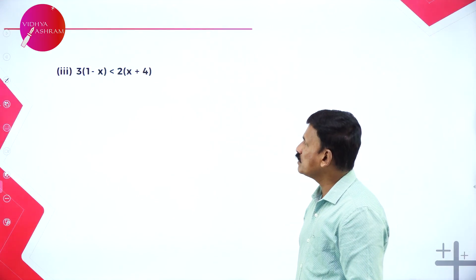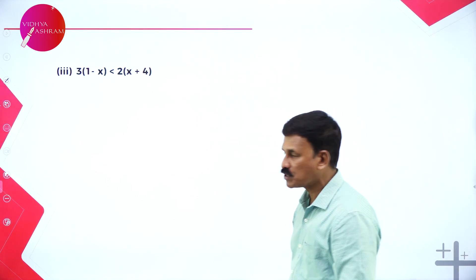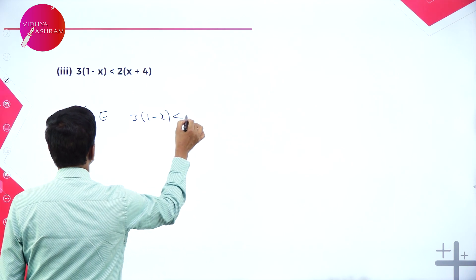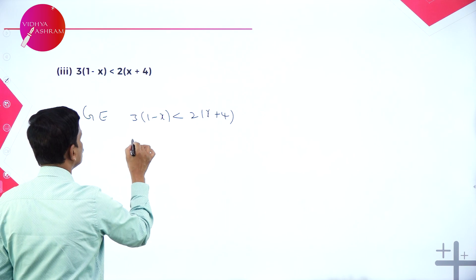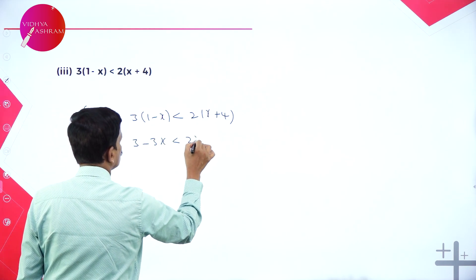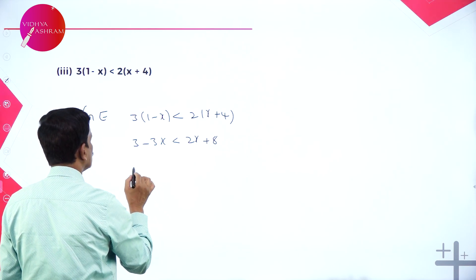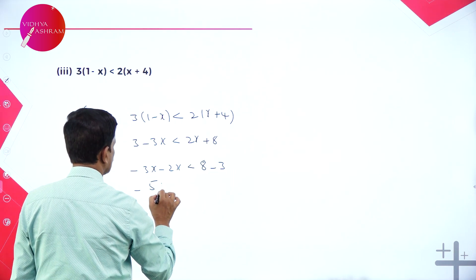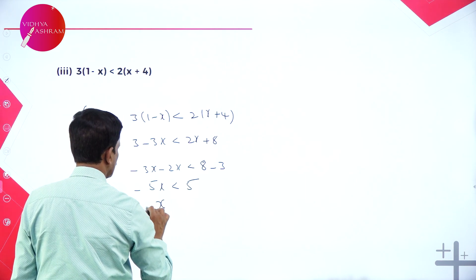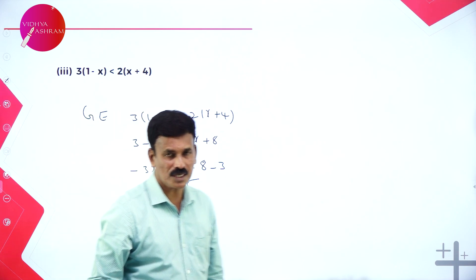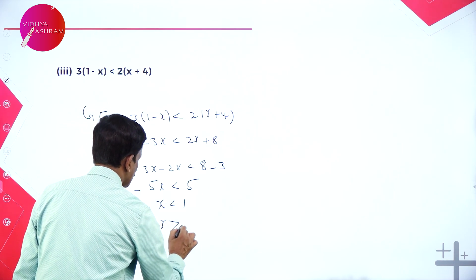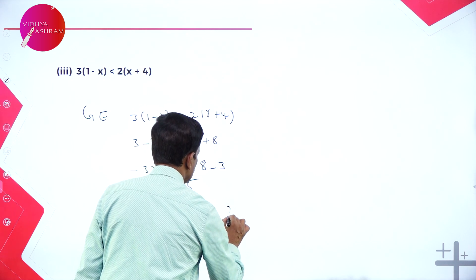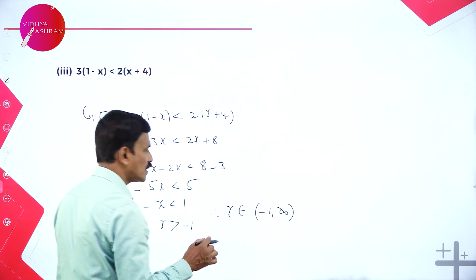Now the next problem: 3(1 - x) < 2(x + 4). The given equation expands to 3 - 3x < 2x + 8. Rearranging, -3x - 2x < 8 - 3, so -5x < 5, which means -x < 1, and therefore x > -1. The solution set is x ∈ (-1, ∞).